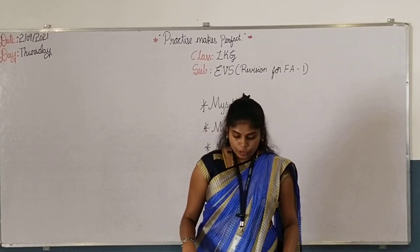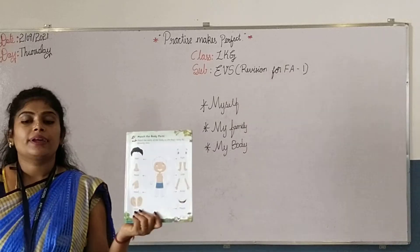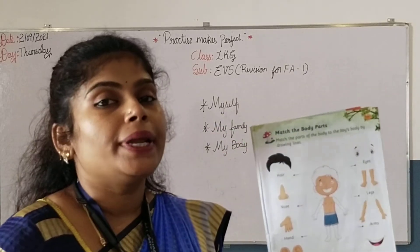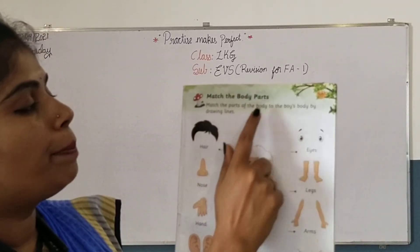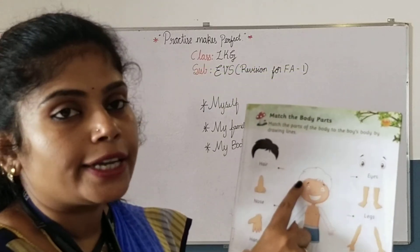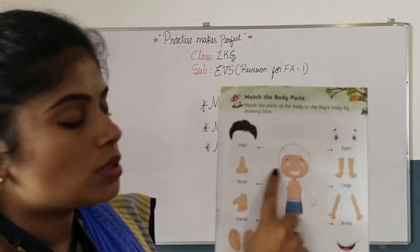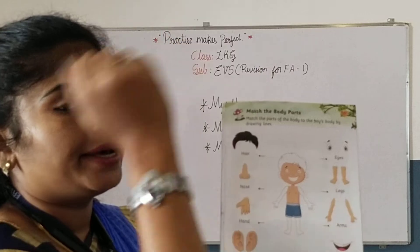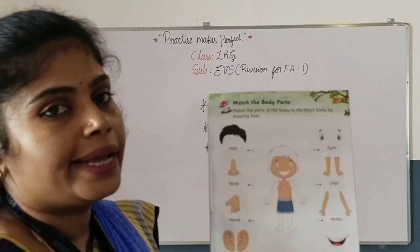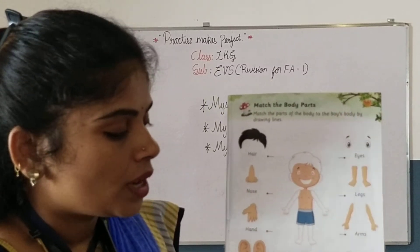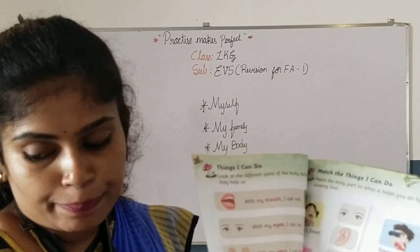You have to match the correct body parts. This activity we have already completed — you have to revise it for your assessment. Match the body parts: nose — where is the nose? Here is the nose, you have to match. Then hand, ears, eyes, legs, arms, and mouth. You have to match the correct body parts.